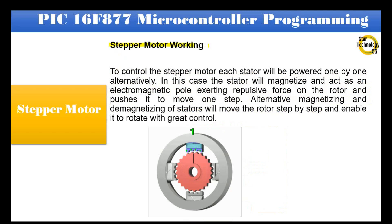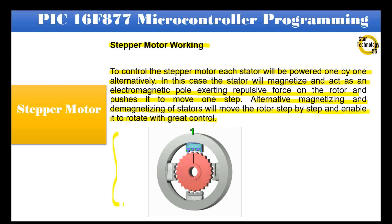Stepper motor working. To control the stepper motor, each stator will be powered one by one alternately. The stator will magnetize and act as an electromagnetic pole, exerting a repulsive force on the rotor and pushing it to move one step. Alternately magnetizing and demagnetizing the stators will move the rotor step by step and enable it to rotate with great control.